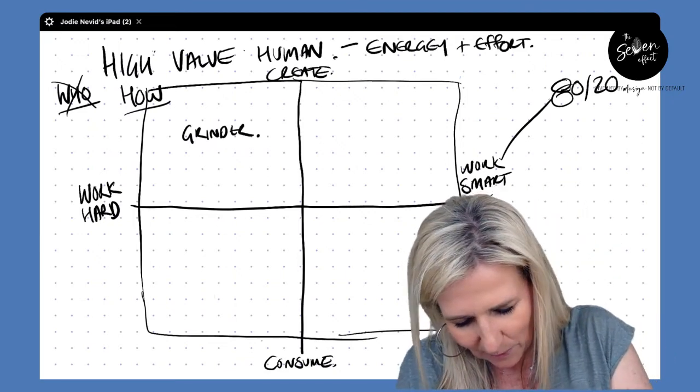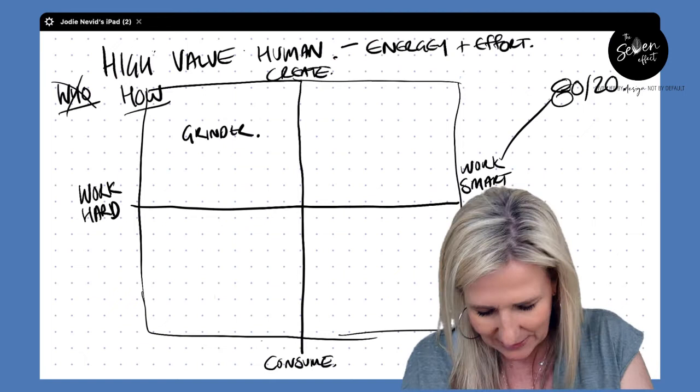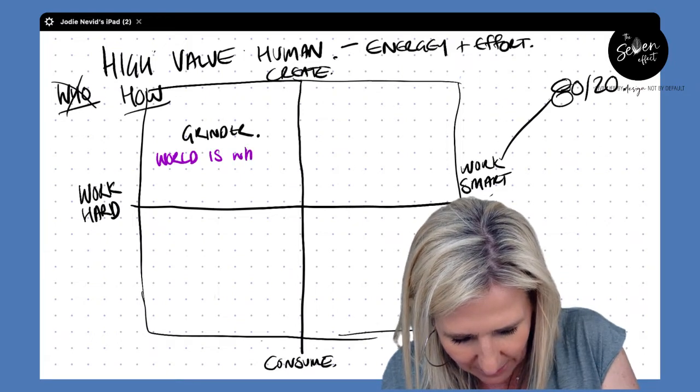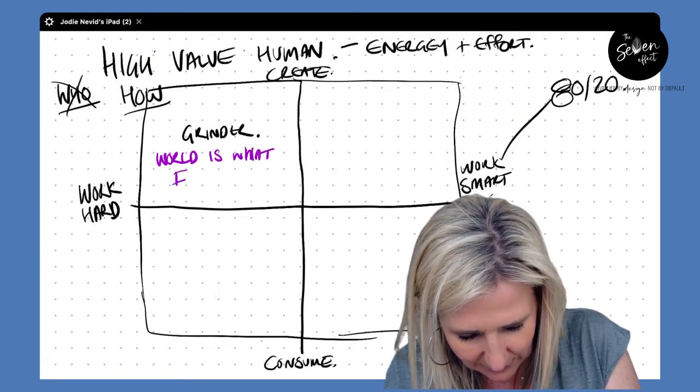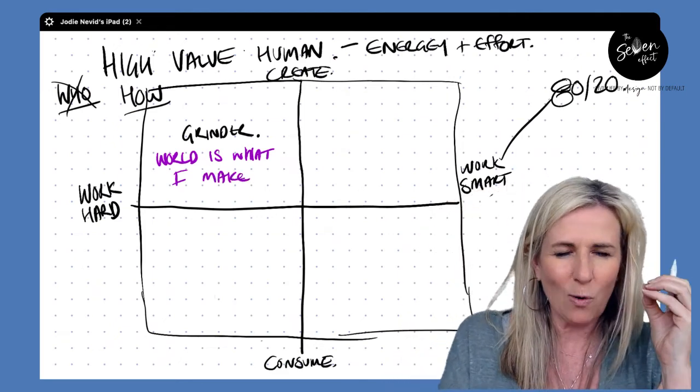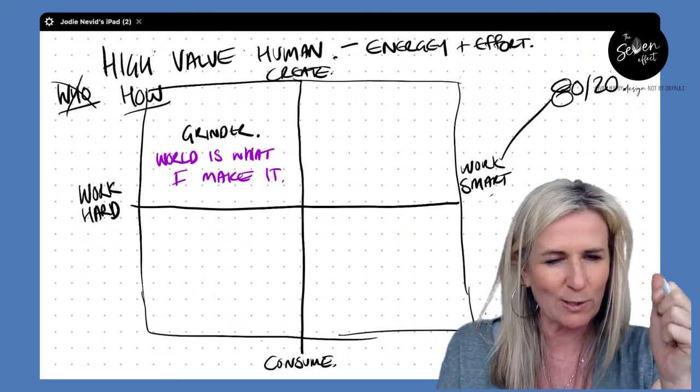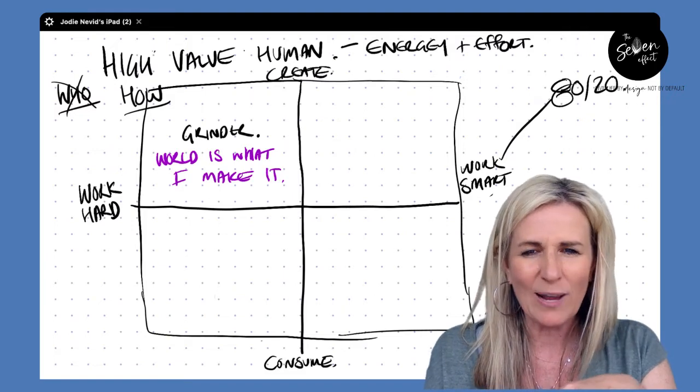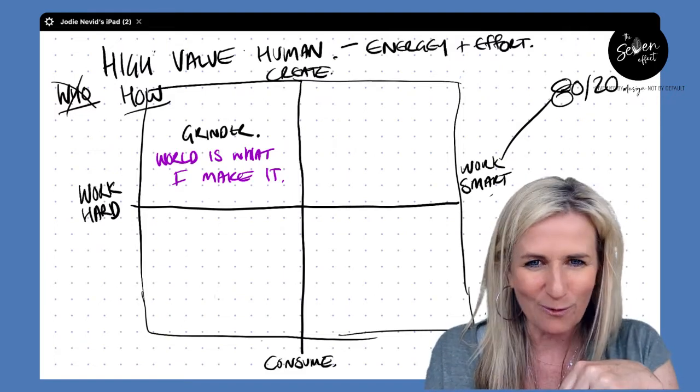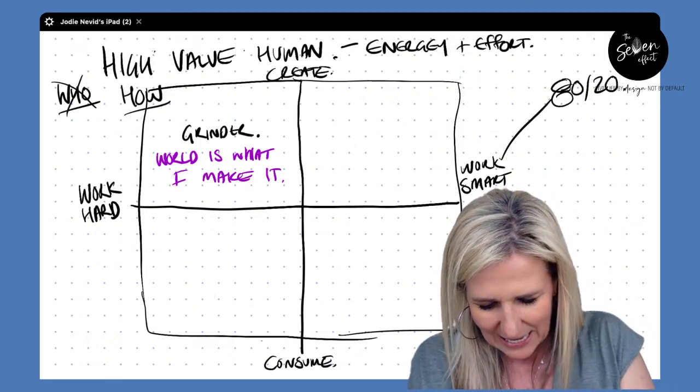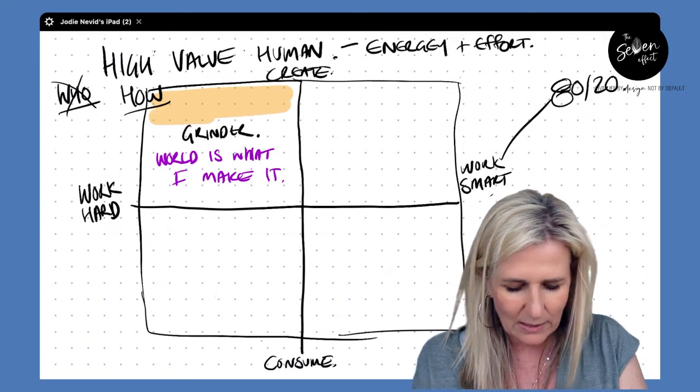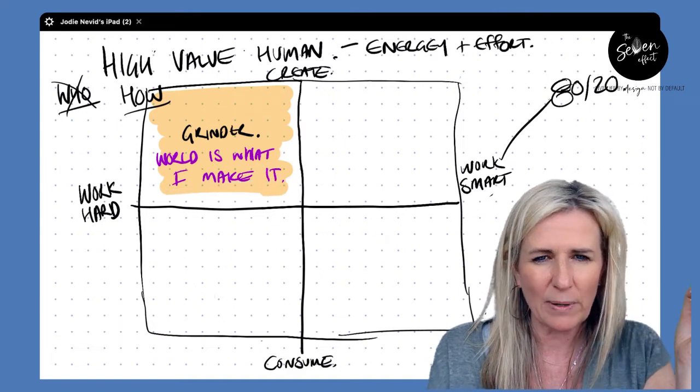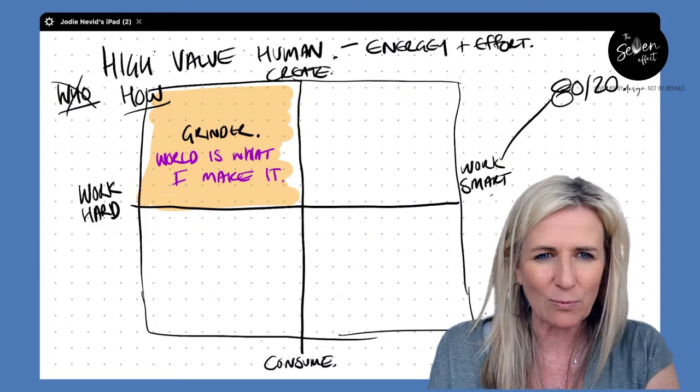And so when we're operating in a grinder type space, we tend to believe that the world is what I make it. Grinding or being in the grinder space is exceptional for taking responsibility, grabbing the bull by the horns and making things happen. In the grinder zone lands your workaholics and your control freaks. I've done my time there. The problem is it's not a sustainable space because this is where burnout can happen, or relationship breakdowns as well, because let's face it, trying to keep up to the standards of a grinder can be really challenging.